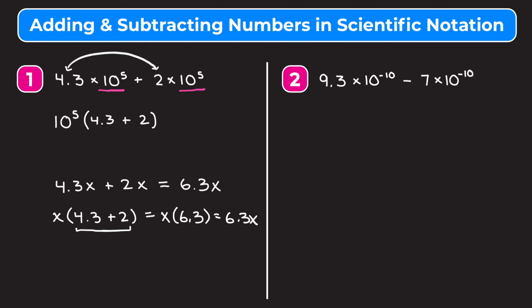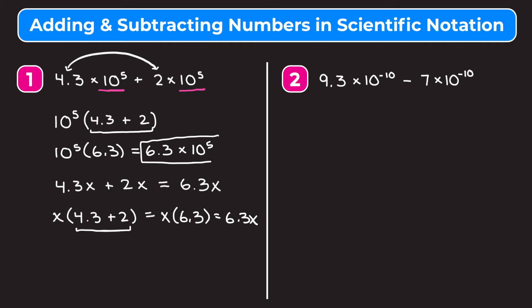So that's similar to what we're doing in example 1 — we're just factoring out the 10 to the fifth. So we can add 4.3 and 2, and we're going to have 10 to the fifth times 6.3. And in multiplication we can write our multiplication in any order, so we can write this as 6.3 times 10 to the fifth.